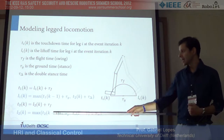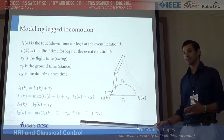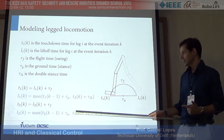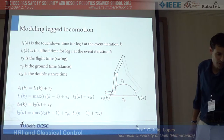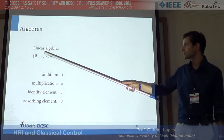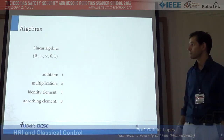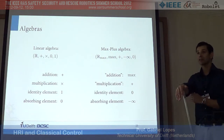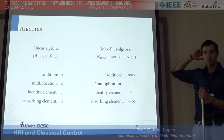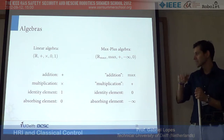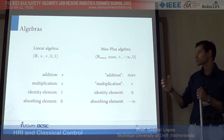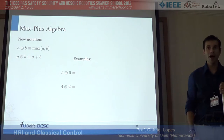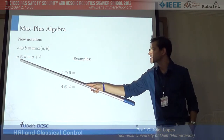All these equations are nonlinear in traditional algebra. But if you consider an algebra using only maximum and plus operations, they become easier to manipulate. This is your max-plus algebra: instead of standard real numbers with addition and multiplication, your addition operation is now max, and your multiplication is plus, with new identity and absorbing elements. In this new algebra, 5 plus 6 equals 6, and 4 times 2 equals 6. It's just a new notation.